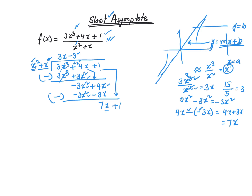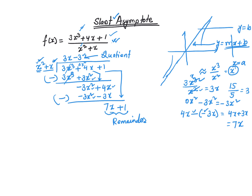The power of x in the remainder is 1, and the power of x in the divisor is 2, so it doesn't go. That's your remainder, and 3x minus 3 is your quotient. So I can rewrite the function as: f(x) = (3x³ + 4x + 1) / (x² + x), which equals 3x minus 3 plus (7x + 1) / (x² + x).